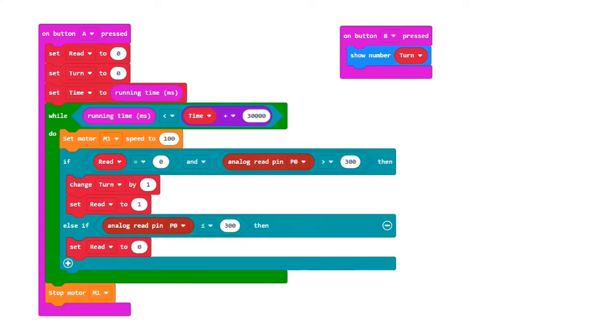Now we change the program so that a loop runs for 30 seconds. If the analog value of P0 becomes higher than 300 it is because some light has been reflected and the variable TURN is increased by 1. The variable red ensures that the number of turns is only increased once while the pointer is passing.